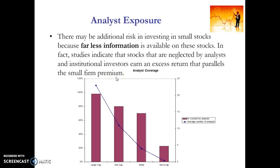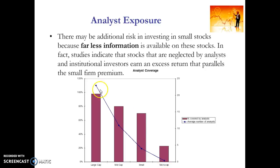Another potential explanation for the size effect is information asymmetries. There tends to be a lot less information available for small stocks. What we've plotted here for the US market is the percentage of stocks covered by analysts and the average number of analysts covering each stock. The majority of large caps and quite a large number of mid-caps are covered by at least one analyst. Whereas for micro-caps, only about 20% are covered by at least one analyst, and the average number of analysts covering each stock is well below one, compared to about 23 for large-cap stocks. Given there's less research and fewer analysts covering these stocks, information asymmetry creates a risk, and investors may demand a higher return for investing in those micro-caps.